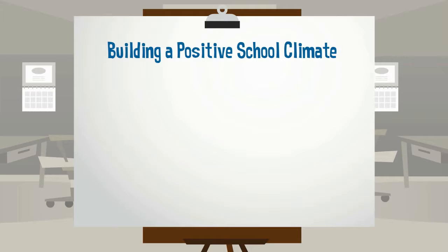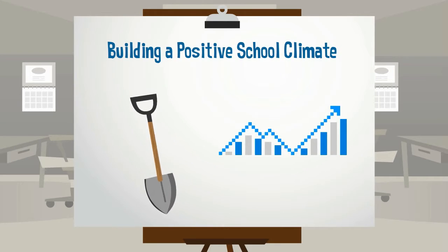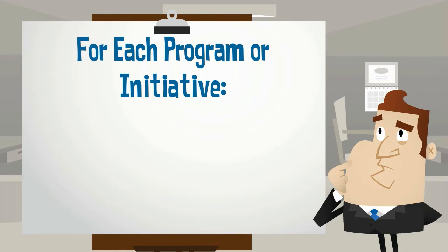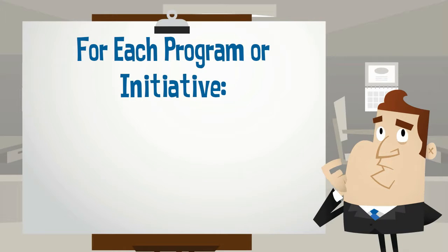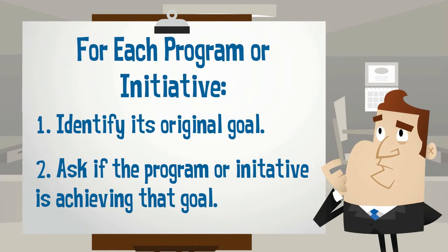In order to create a systemic approach to building a positive school climate, your PLC must now dig deeper to assess the impact of current approaches and programs. For each program or initiative in your school, your team must first identify its original goal and then ask if the program or initiative is achieving that goal. How do you know?